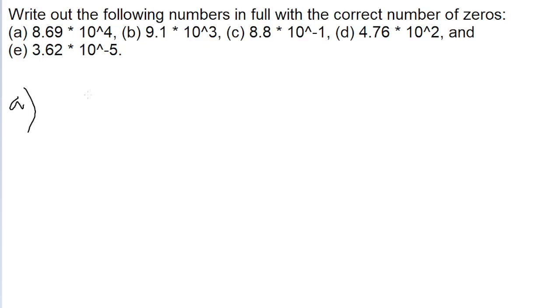Hey guys, in this problem we're given a bunch of numbers in scientific notation with 10 to the power of something, and we're asked to convert them all into regular numbers with the right number of zeros.